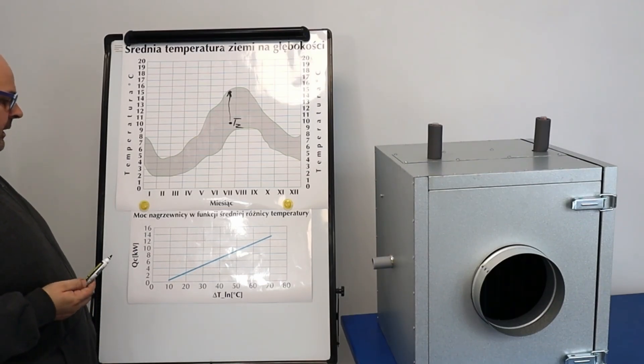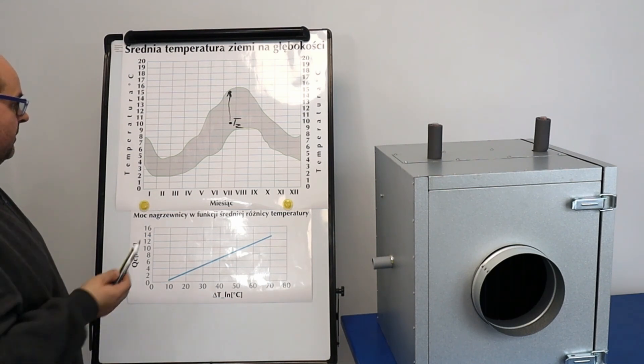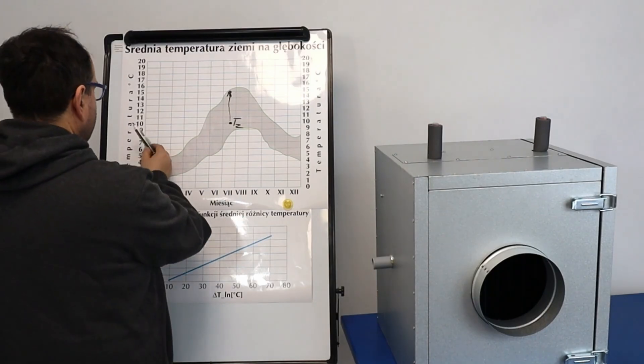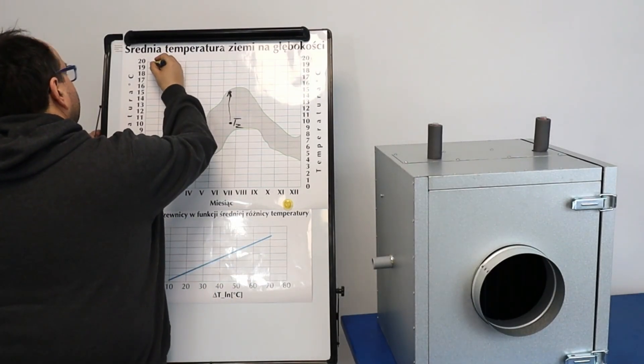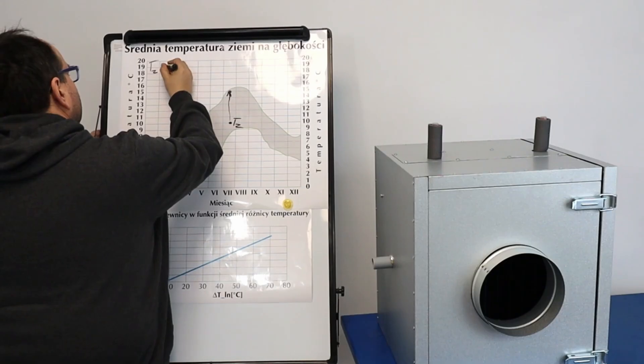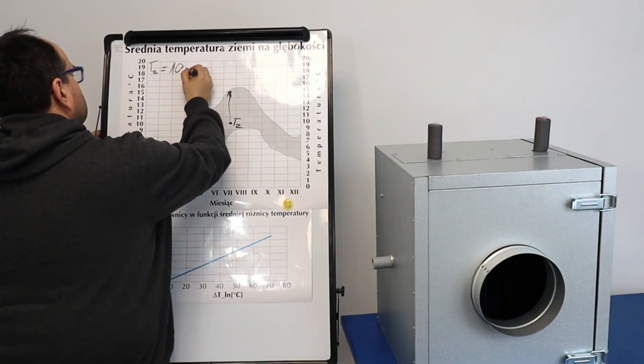Now, it's very important to know how to calculate the power of a cooler. It's very simple. Anyone can do it. Look, the temperature of the ground, I assume that it's 10 degrees. Tz is 10 degrees Celsius.